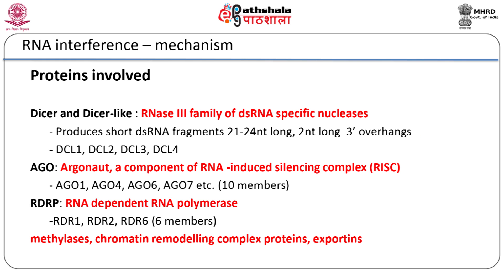Much effort was then made to understand the process of gene silencing. Using mutants showing defects in gene silencing, a number of proteins were identified that played a role in bringing about post-transcriptional gene silencing. These included Dicer or Dicer-like proteins that cleaved double-stranded RNA into 21–24 nucleotide long fragments with two nucleotide overhangs. Another protein, Argonaute, was identified which formed a part of the RNA-induced silencing complex or RISC. An RNA-dependent RNA polymerase was also involved in silencing, and so were some methylases called HEN methylases, chromatin remodeling proteins, and exportins — the latter being responsible for transporting the double-stranded RNA out of the nucleus.